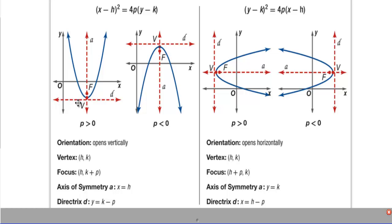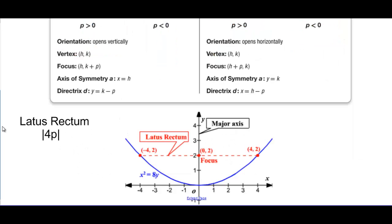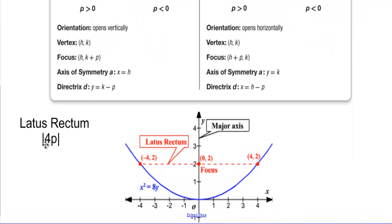If the focus is above, the directrix is below. If the focus is on the right side of the vertex, the directrix is on the left — they are the same distance from the vertex. We also have the latus rectum, which equals the absolute value of 4p. It is the distance through the focus of two points on the parabola. If the latus rectum is 8, you go 4 to the right and 4 to the left of the focus.